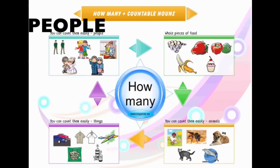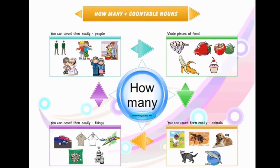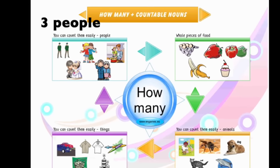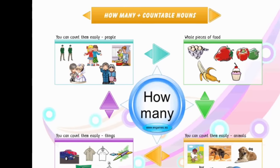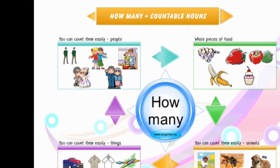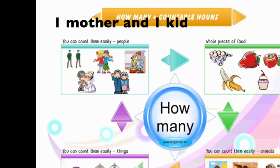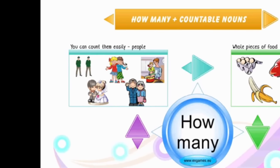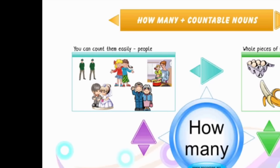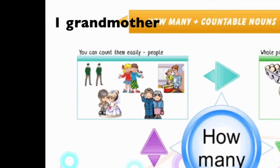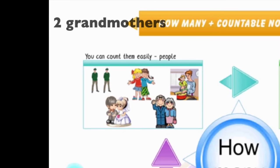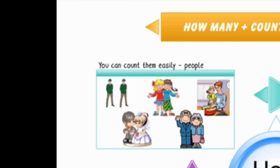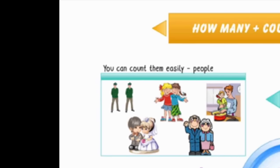The first example that we have is about people. You can easily count one person, two people, three people. You can count students in a class, 29 students for example. You can count one mother and one kid or one mother and two kids. You can count easily people like grandparents. I have one grandmother and one grandfather or I have two grandmothers and one grandfather, and you can also count people in general like a husband and a wife.